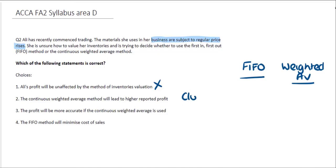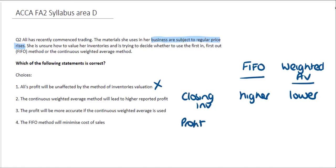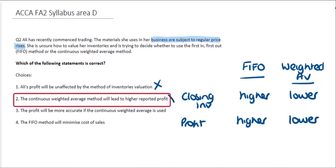To summarise what we know: closing inventory will be higher under FIFO and lower under weighted average. If we have a higher closing inventory valuation, that makes our profit higher. So reported profit will be higher for FIFO and lower for weighted average. Therefore the second statement — that the continuous weighted average method will lead to higher reported profit — is also incorrect, as it's the opposite.